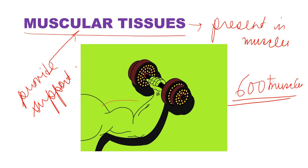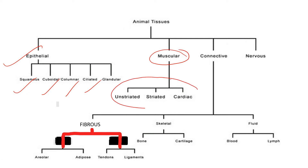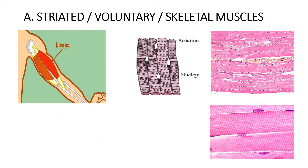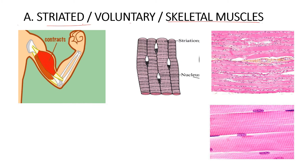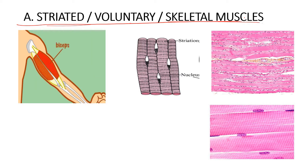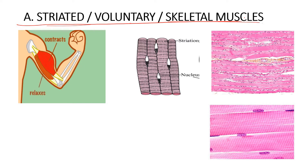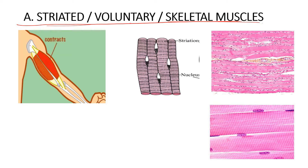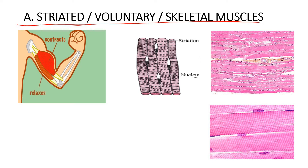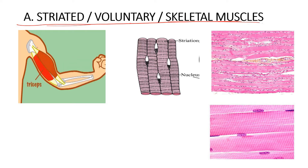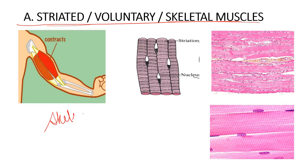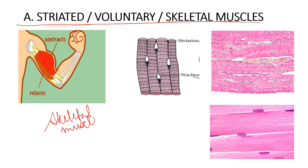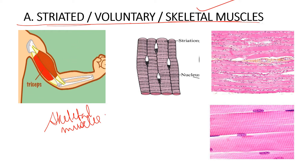Muscular tissues are divided into three types: unstriated, striated, and cardiac. The first type is striated, or voluntary, or skeletal muscles — three names for the same type. These muscles are attached to the bones, and for this reason they are called skeletal muscles.